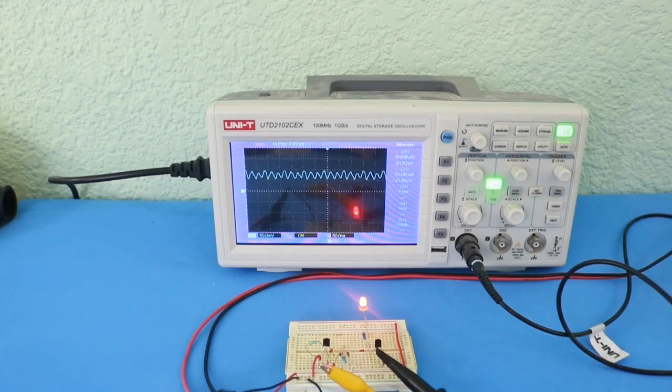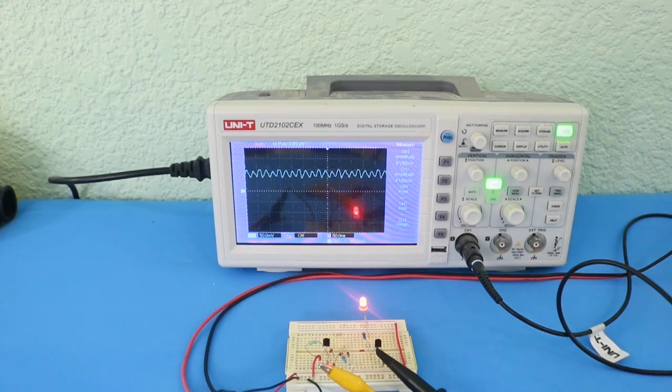there you can see the rectified signal, which is DC, that is fed to the base of the second transistor.